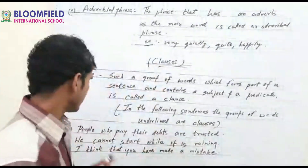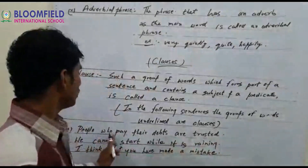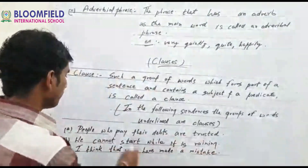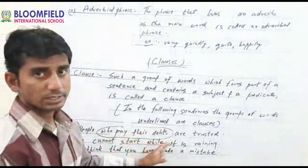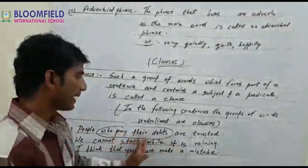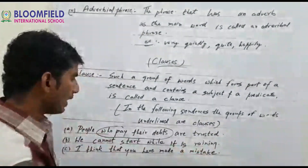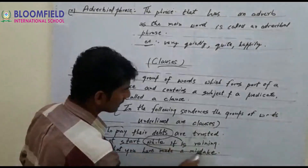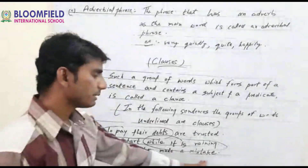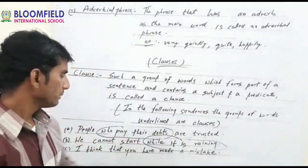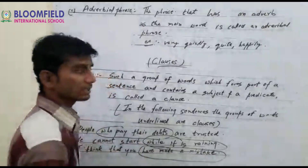Example one: 'People who pay their debts are trusted' — 'who pay their debts' is a clause here. Example two: 'while it is raining' — 'while it is raining' is a clause. Example three: 'I think that you have made a mistake' — 'have made a mistake' is the clause here.